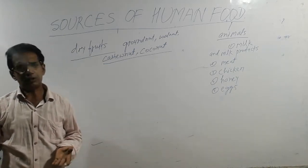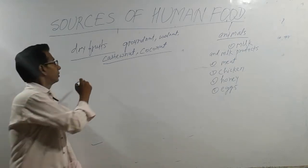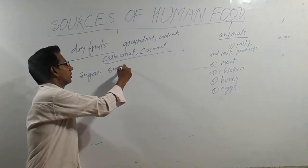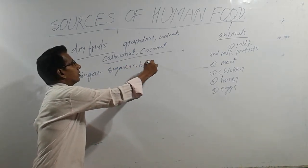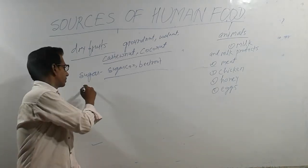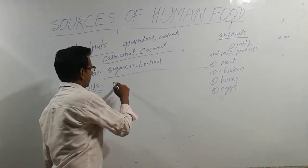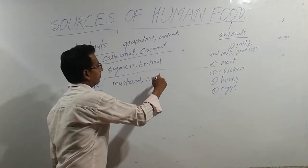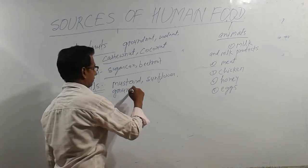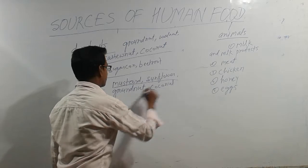We also use sugar, which we use in different types of sweets and in making tea and coffee. We get sugar from sugarcane and beetroot. For oils, the plants that give us oil are mustard, sunflower, groundnut, and coconut.